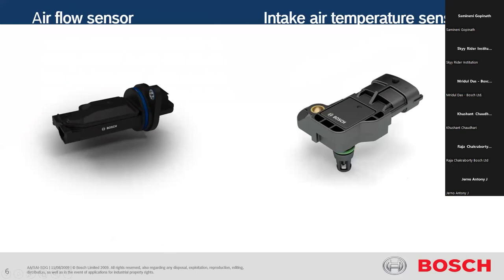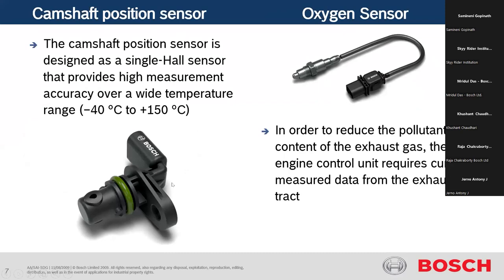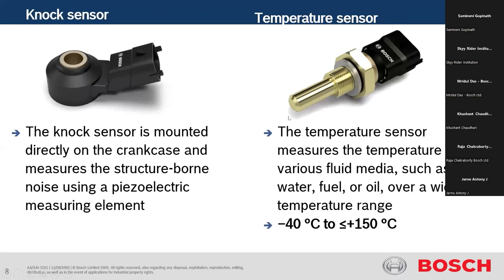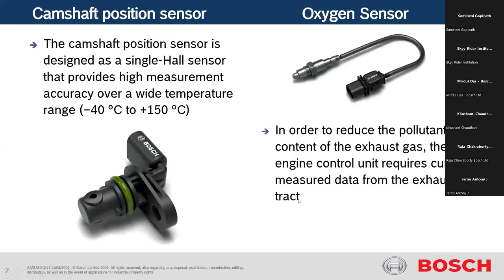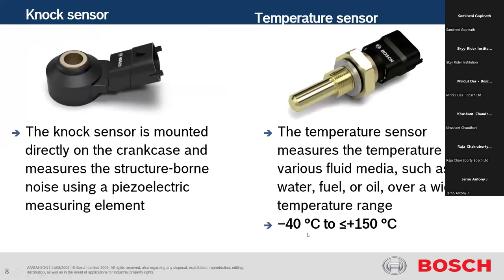Here are some example sensors. Their composition or appearance can differ between companies, but basically they look like this. This is an airflow sensor — it senses how much airflow has been done in the engine compartment. There is a temperature sensor that collects data according to temperature changes. The camshaft position sensor is designed as a single Hall sensor that provides high measurement accuracy over a wide temperature range, measuring the position of the camshaft. There is also an oxygen sensor that measures the amount of oxygen remaining in exhaust gas.